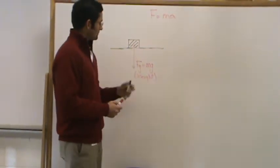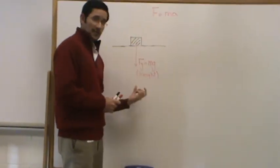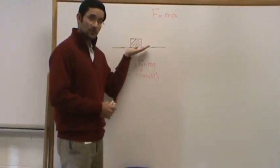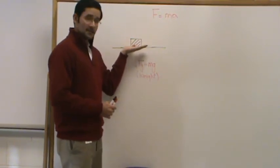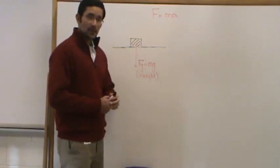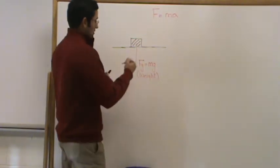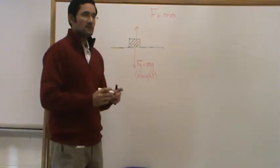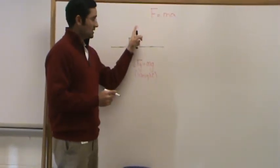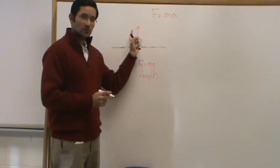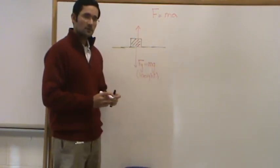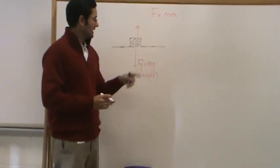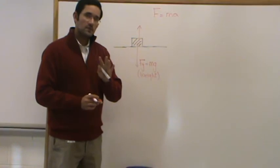On a flat surface, the force of gravity is trying to push this box down into the surface. If the surface is strong enough, it prevents the box from going down and keeps the box in equilibrium — meaning the surface is exerting an equal and opposite force upwards. The force that the surface exerts on the box is called the normal force, and the normal force is always perpendicular to the surface.